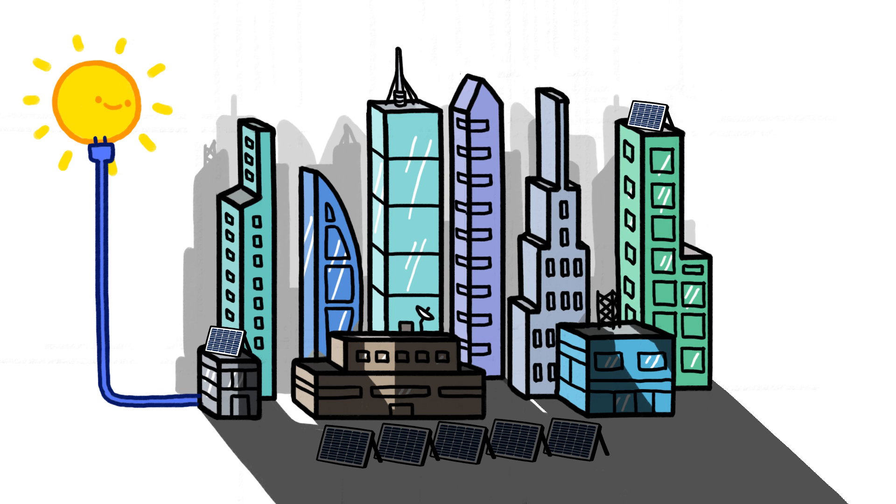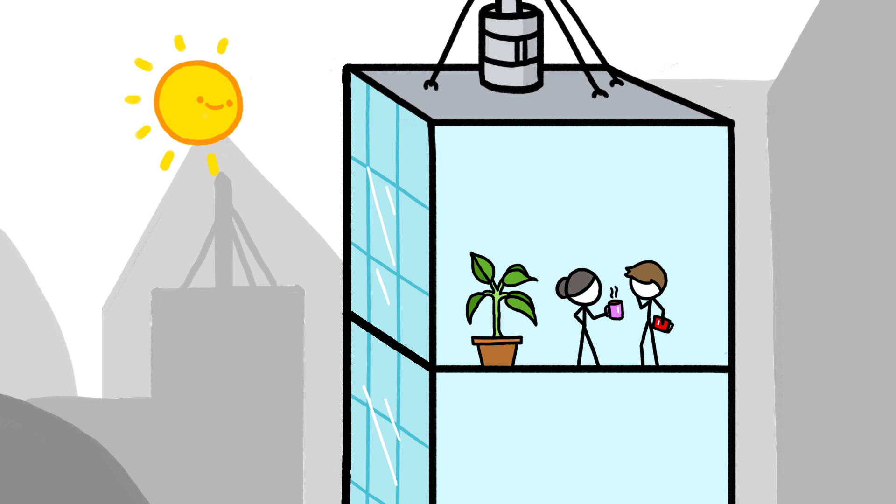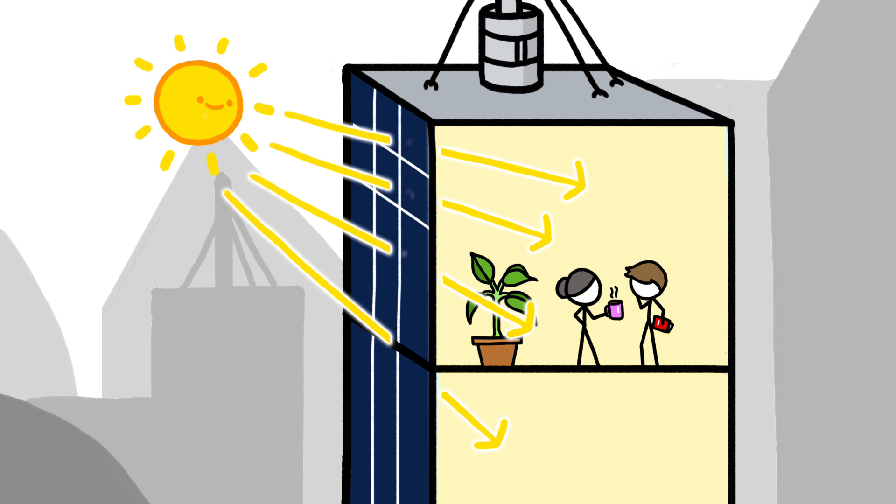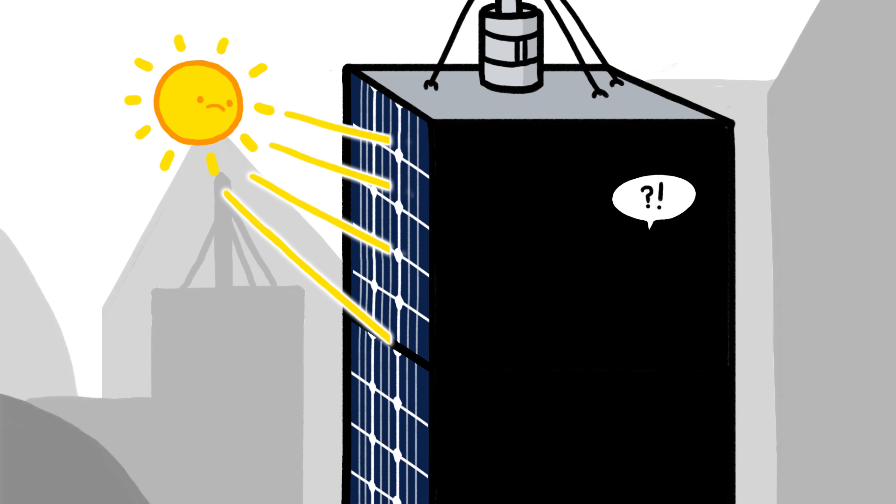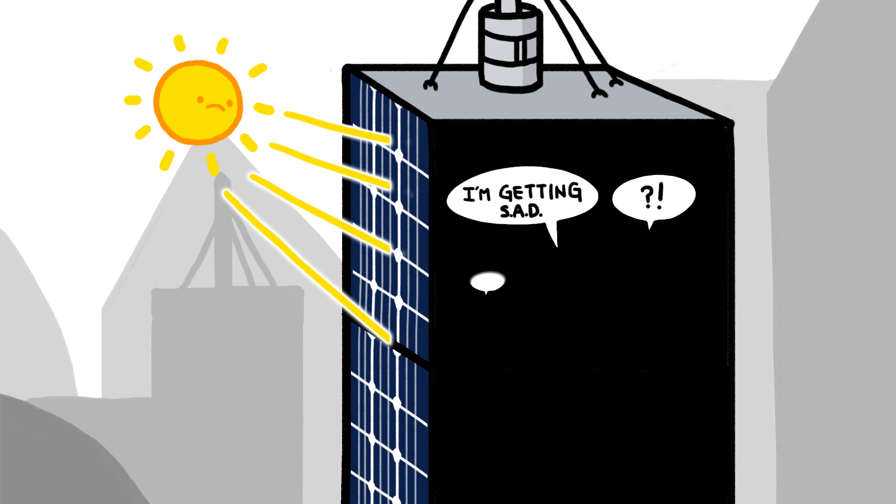Except almost all the sun-catching area in cities is on the sides of buildings, which are usually designed to let light in. We could plaster solar panels all over the sides of buildings, but that would be sad for the people inside.